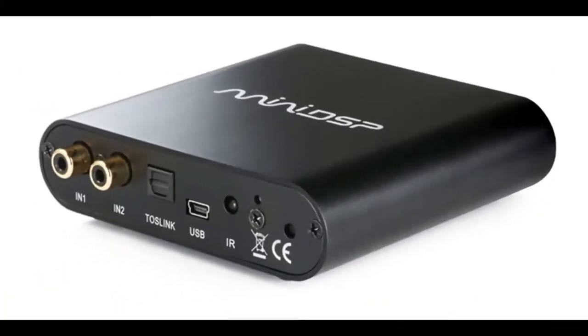Here we have the input panel of the 2x4 HD. From left to right you'll see two analog inputs, a Toslink optical input, a USB input which is used both for streaming audio as well as computer control of the 2x4 HD. Finally we have the infrared remote control input.